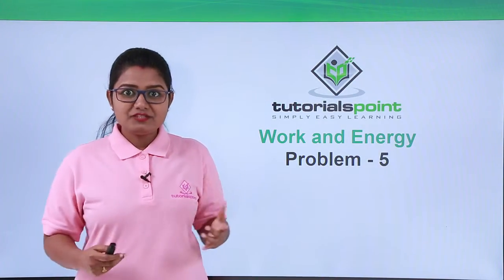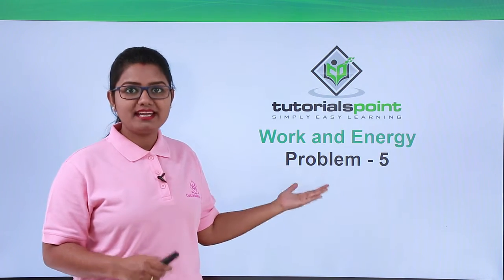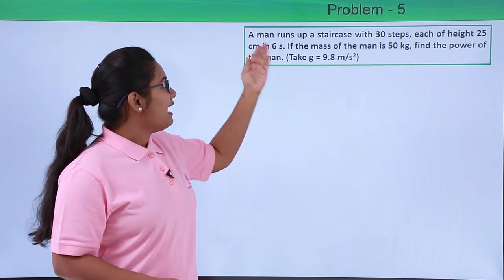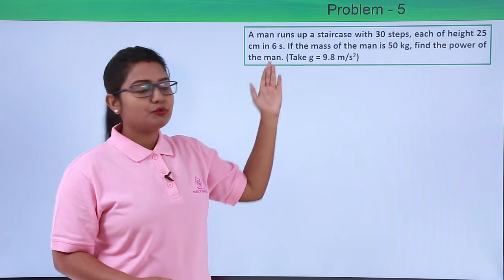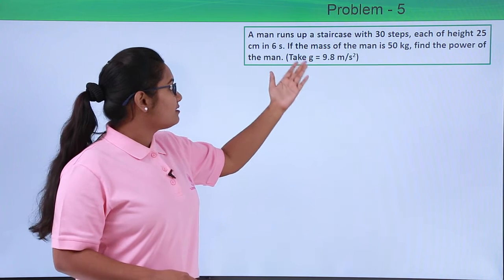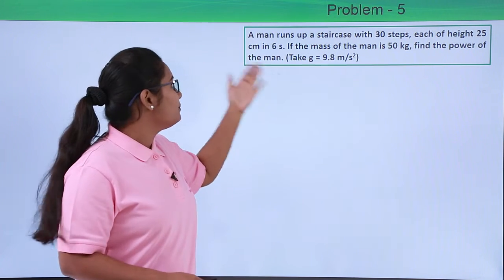Hello everyone, in this video I have got another problem to solve from the same chapter, that is work and energy. Here is the problem which reads: A man runs up a staircase with 30 steps, each of height 25 centimeters in 6 seconds. If the mass of the man is 50 kg, find the power of the man.